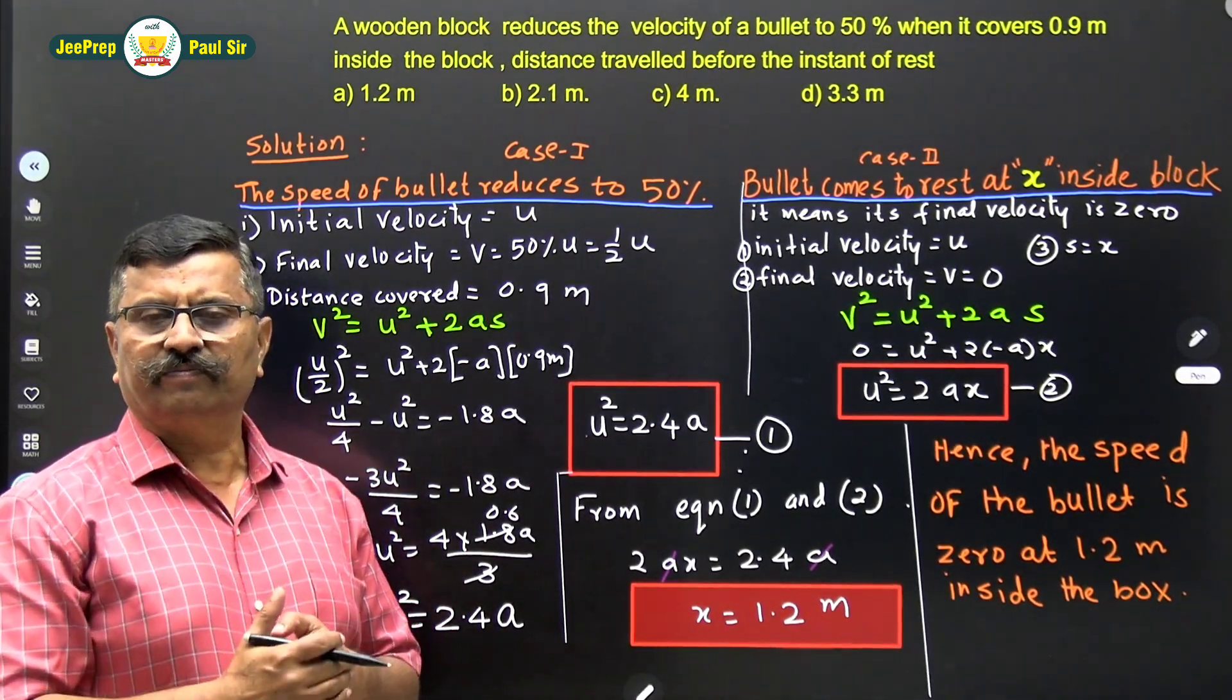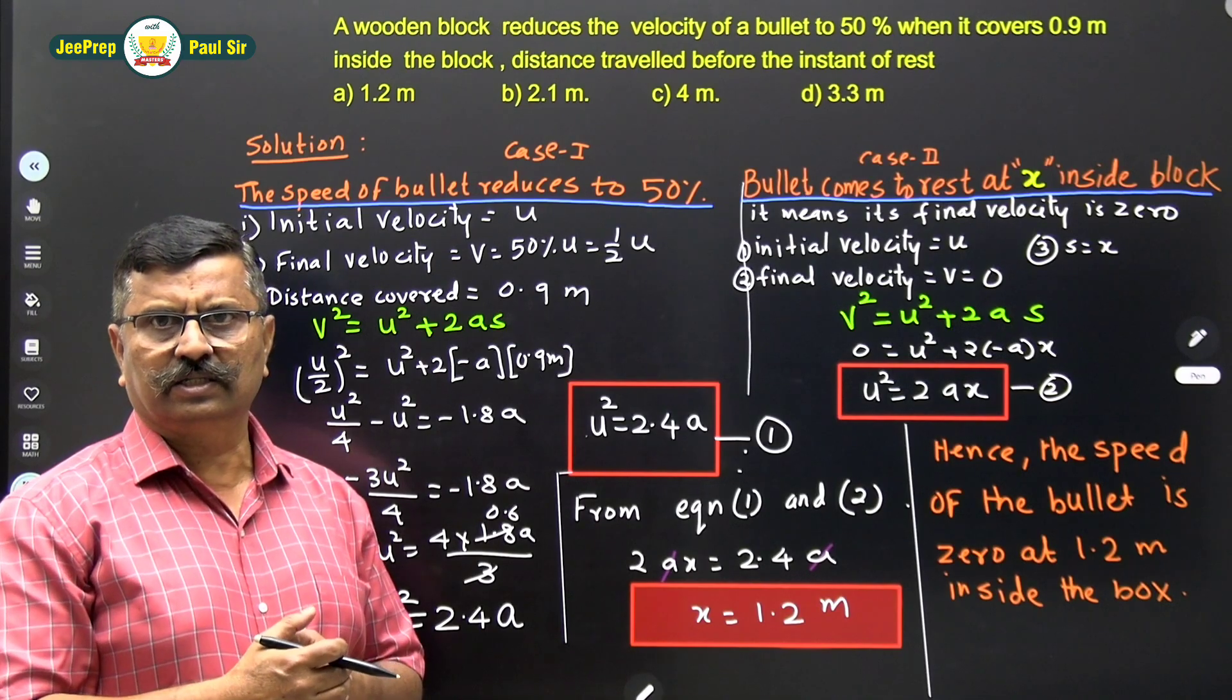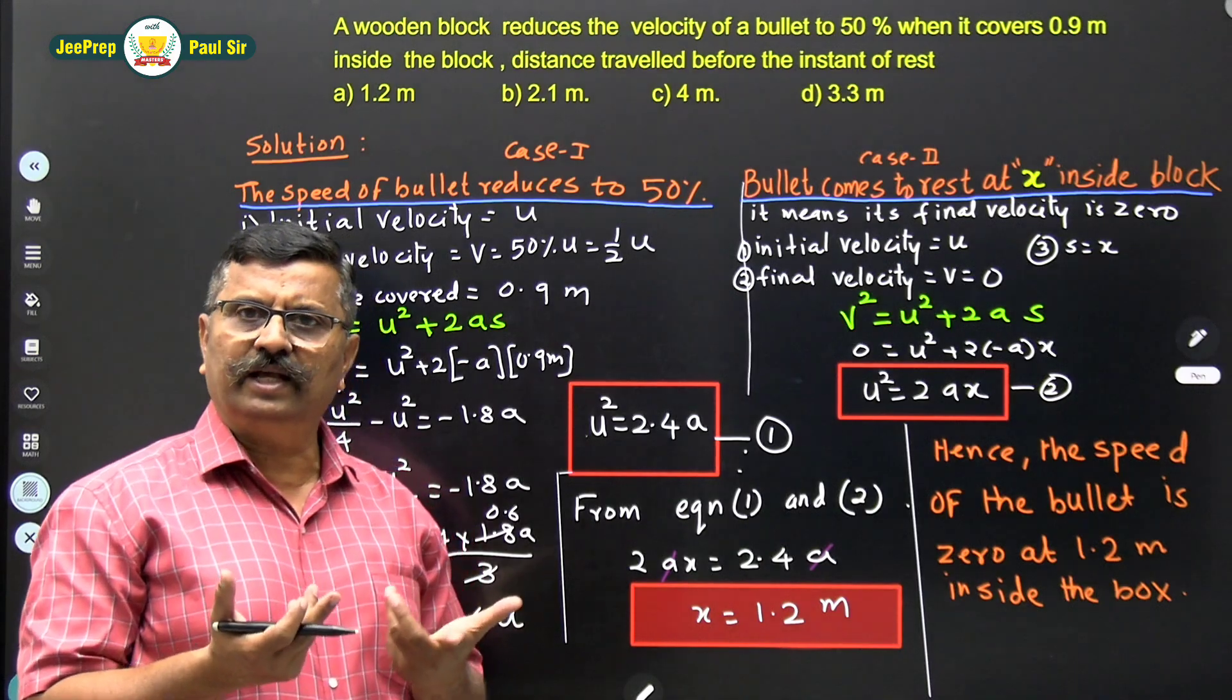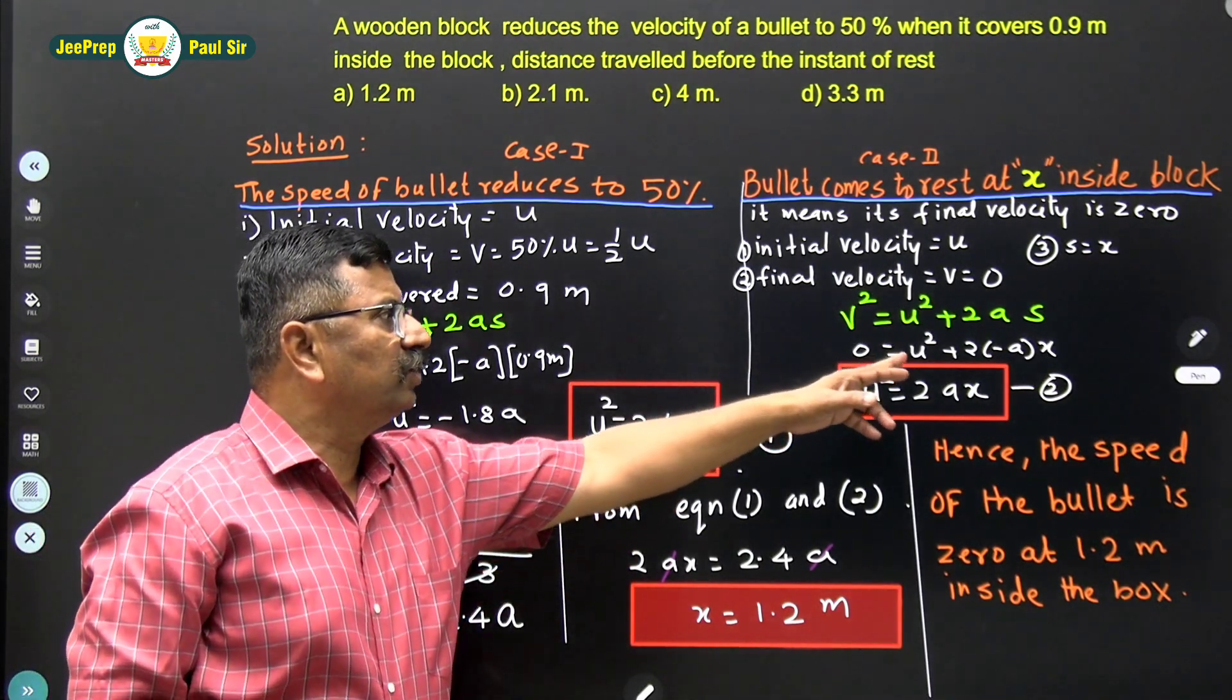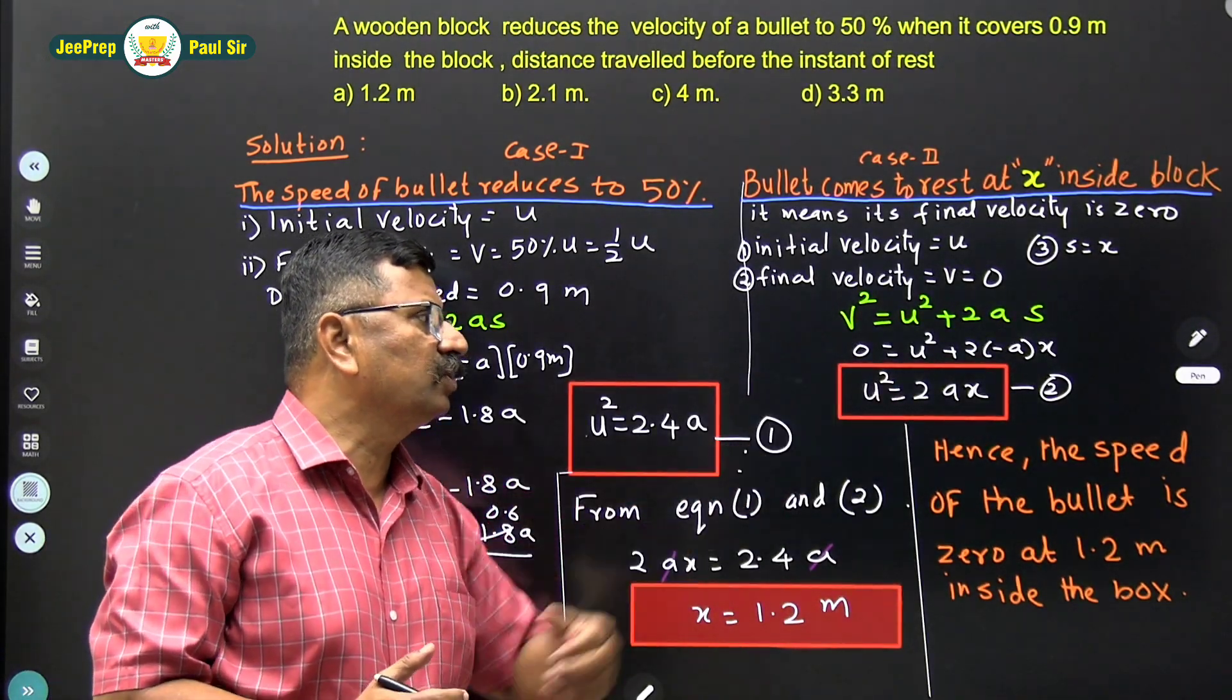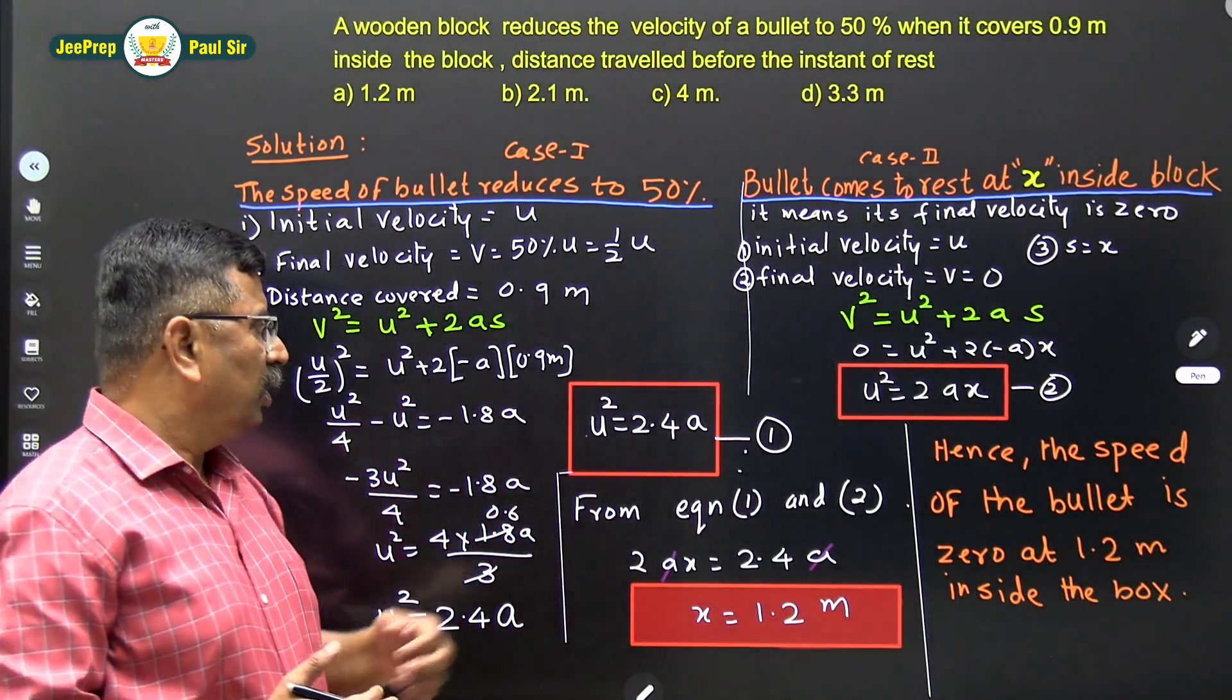Now, consider the second case. Bullet comes to rest at a distance x. So therefore, the final velocity is 0. Initial velocity u will be as it is. Therefore, 0 is equal to u square plus 2 into minus a x. Therefore, u square is equal to 2ax.